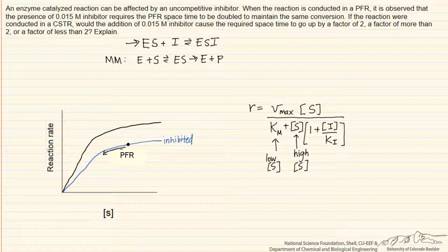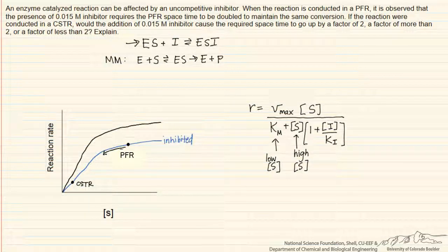Whereas in a CSTR, we operate at the final substrate concentration where the substrate concentration is lowest, and where the inhibitor will have the least effect. So we expect that the required space-time will go up by less than a factor of 2 for a CSTR, because it operates at the final or lowest substrate concentration everywhere inside the reactor.